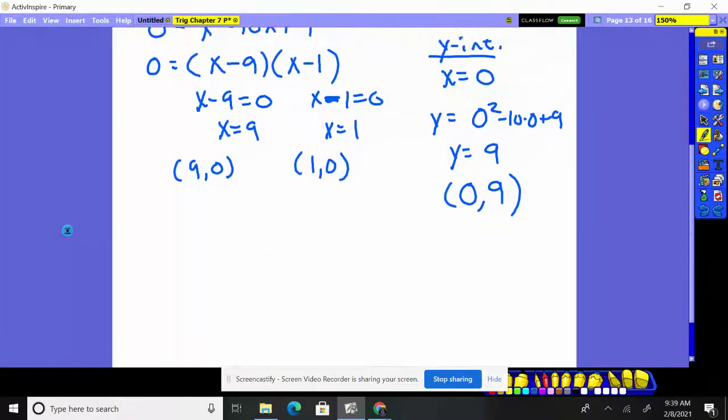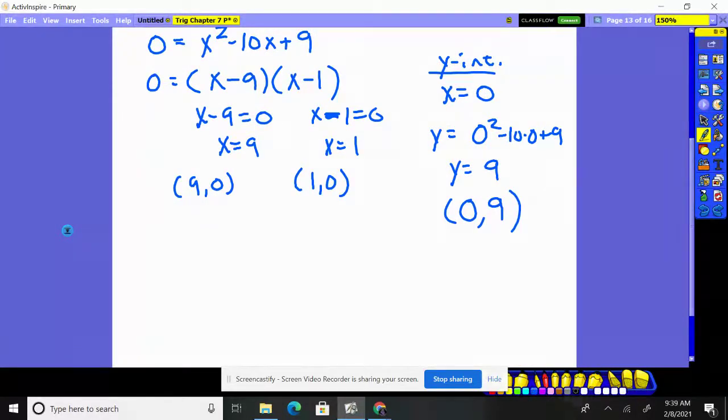We could now, if we wanted, think this through. We know one is crossing right here at (1, 0), one here at (9, 0), and then (0, 9) is the y-intercept. So it's coming and doing something like that.